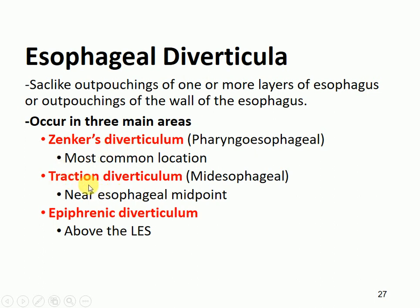Another type is called a traction diverticulum, and this occurs in the mid-esophagus. The third type we call epiphrenic diverticulum, and this occurs just above the lower esophageal region. These are the main areas where the esophageal diverticulum can occur.